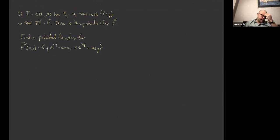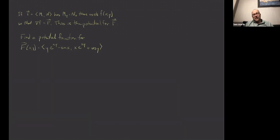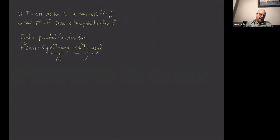I occasionally find people who see some methodology on YouTube videos about how to find potential functions. There's nothing magical about it — you just integrate with respect to the appropriate variables, remembering that the other variables are constants as far as that variable is concerned. Here we're asked to find a potential function for this F(x,y). Think of the first component as capital M and the second as capital N. We're going to check that this fits the condition for having a potential function.